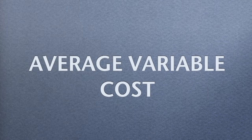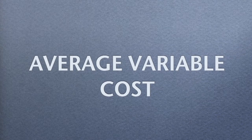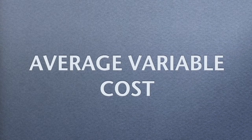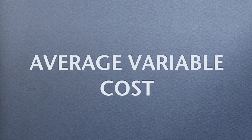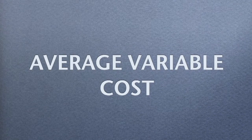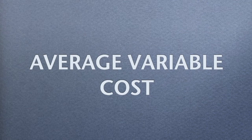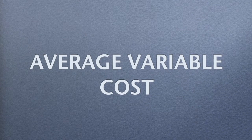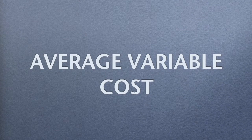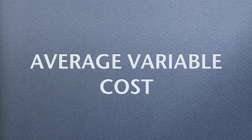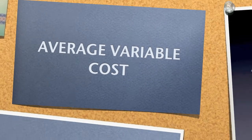Unit variable costs dependent on the level of output are called average variable costs. They can be calculated by dividing variable costs by quantity, or by subtracting average fixed costs from average costs.